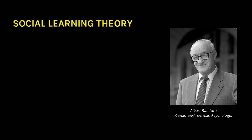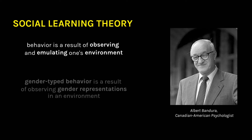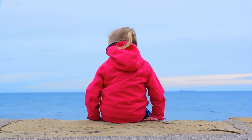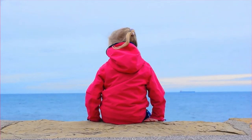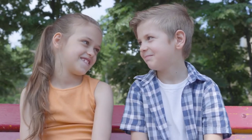Several theories help explain how gender ideas are formed at young ages. Developed by psychologist Albert Bandura, social learning theory describes the idea that behavior is a result of observing and emulating the environment around oneself. Specifically for gender-typed behavior, this results from observing the gender representations in one's environment. Children learn what it means to be male and female through the world around them, and mirror the messages seen by internalizing and incorporating them into their behaviors.